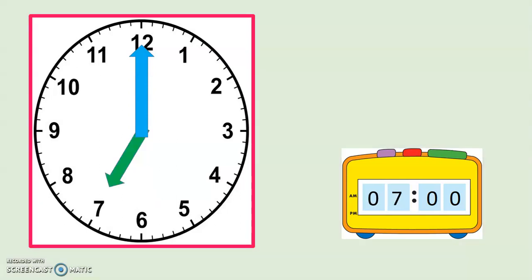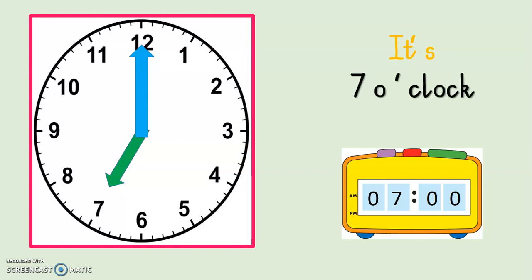The long hand is on the 12, short hand on the 7 — it is 7 o'clock. Digital time is 07:00 in the morning. In the evening it will be 19:00, meaning 19 hours have passed.